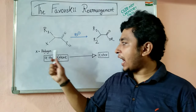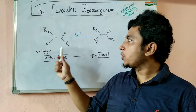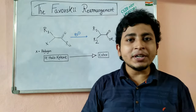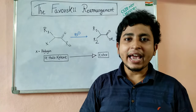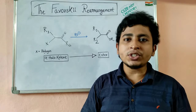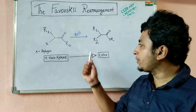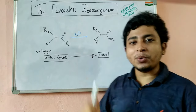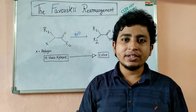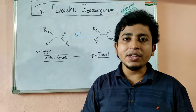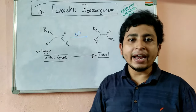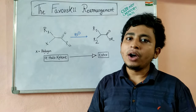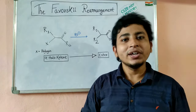When an alpha-haloketone is treated with an alkoxide, a rearrangement will take place and as a consequence of the rearrangement an ester will form. This rearrangement is known as the Favorskii Rearrangement. I will tell you the mechanism of this reaction and at the same time I will tell you how the reaction was discovered.